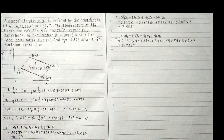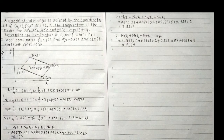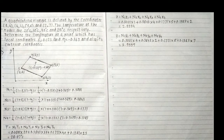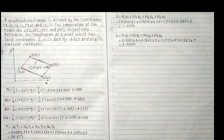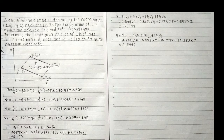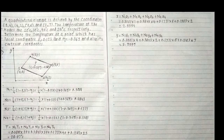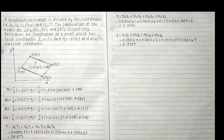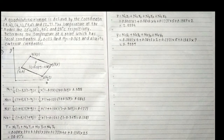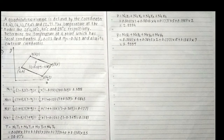A quadrilateral element is defined by the coordinates (1,4), (4,2), (5,6) and (2,7). The temperature at the nodes are 20°C, 30°C, 40°C and 25°C respectively. Determine the temperature at the point which has the local coordinates zeta = 0.123 and eta = -0.369, and also its Cartesian coordinate.